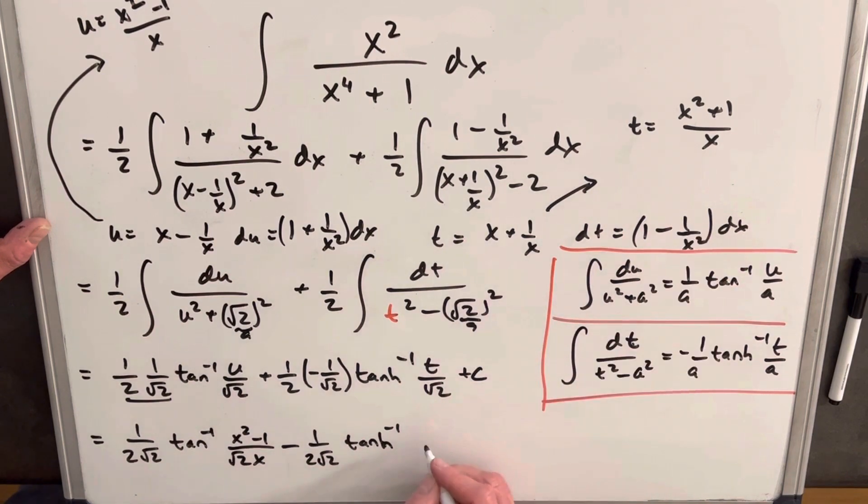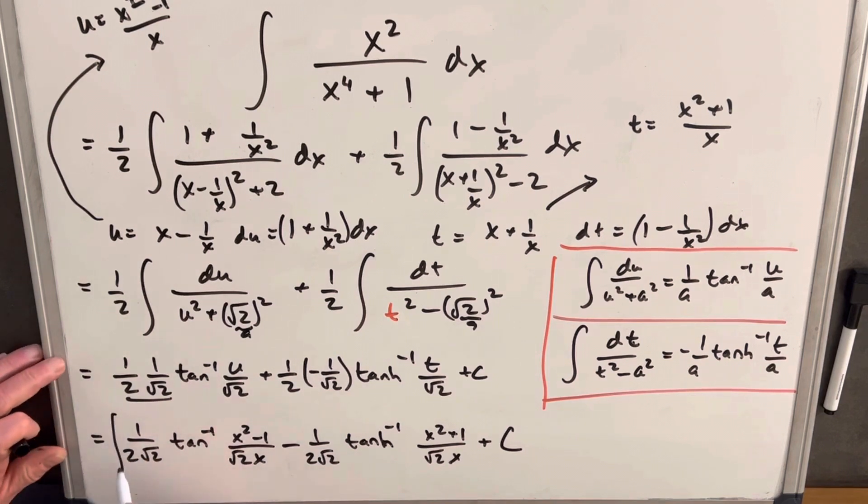What's t? x squared plus 1 over x, square root of 2, plus c. And that's it. That'll be our final solution.